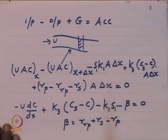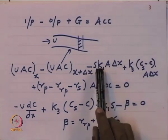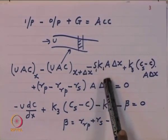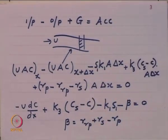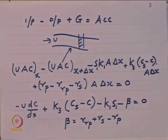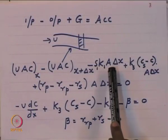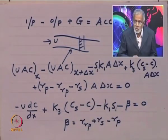The first term represents the amount of oxygen consumed by respiratory organisms in the water using the pollution S1. The term S1 times k1 times a times delta x is the oxygen consumed by respiration of organisms using pollution S1. For example, if we throw carbohydrates into water, they require a certain amount of oxygen — S1 represents that oxygen demand, and k1 is the rate constant at which it gets consumed.